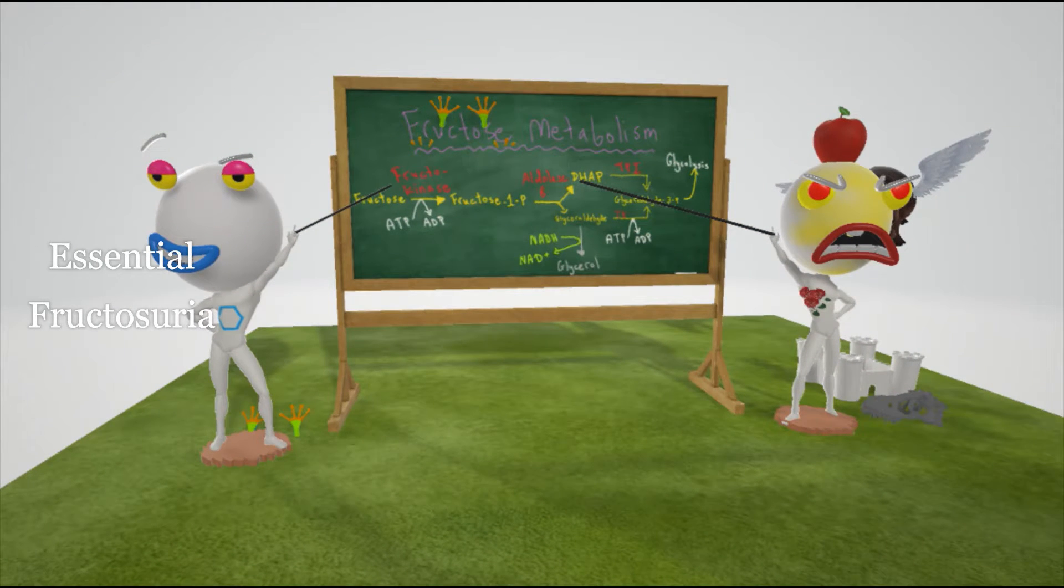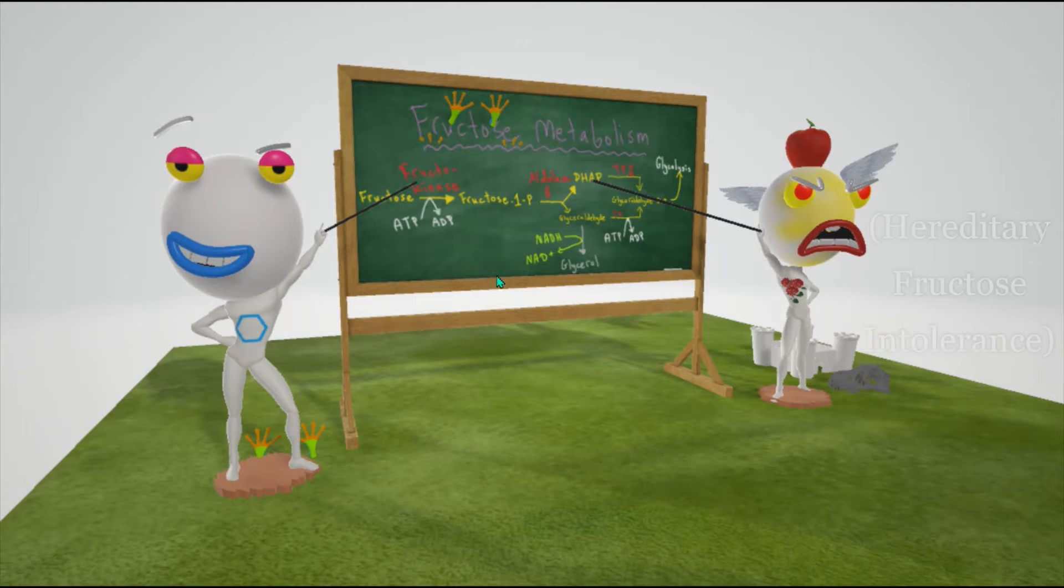In this scene we're going to talk about essential fructosuria, represented by this teacher over here on this side. Next, we're going to talk about hereditary fructose intolerance, represented by the teacher on this side.